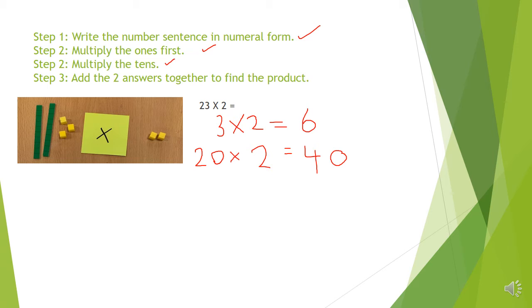Now we have done this step. And the final step is to add these two answers to get together to find the product. So we need to add together 40, add six. What is 40 add six? Put 40 in your head and count on on your fingers in ones. 41, 42, 43, 44, 45, 46. The answer, the product is 46.